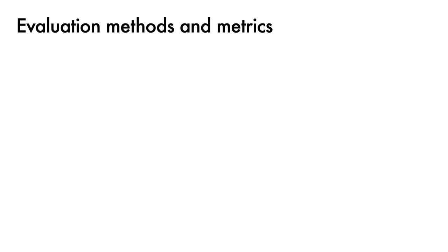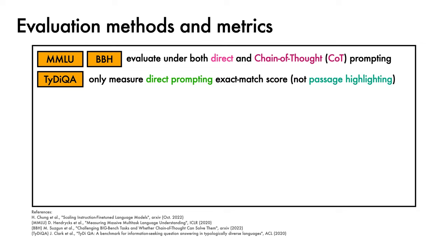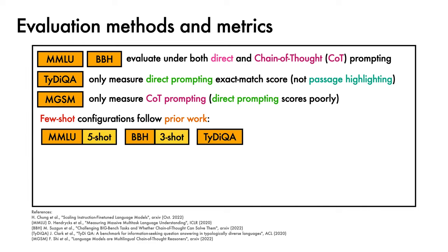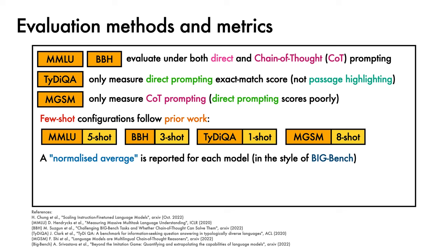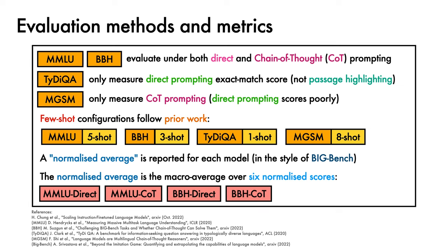We'll now turn to evaluation methods and metrics. On MMLU and BigBench Hard, the models are evaluated under both direct and chain-of-thought prompting setups. On TidyQA, only direct prompting is measured with an exact match score. Passage highlighting is not evaluated. For MGSM, only chain-of-thought prompting is evaluated, since direct prompting scores were found to be very poor. The few-shot configurations follow prior work: MMLU is evaluated 5-shot, BigBench Hard is 3-shot, TidyQA is 1-shot, and MGSM is 8-shot. A normalised average is reported for each model as the macro average of 6 normalised scores: MMLU direct and chain-of-thought prompting, BigBench Hard direct and chain-of-thought prompting, TidyQA direct prompting, and MGSM chain-of-thought prompting.